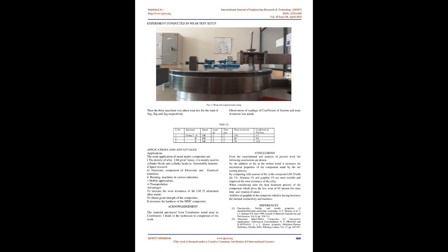In the pin-on-disc test, wear loss greatly depends upon the wear track condition during the whole running distance. When running for long distances, surface roughness of the wear track worsens and this damaged wear track causes increased material removal from the specimen. From the obtained results, one mold component was made with SiC, Al₂O₃, and graphite in an equal ratio of 1%, cut to 8 mm × 8 mm cross-section for 3 pieces. The heat treatment process kept 3 specimens in an induction furnace for 3 hours at a constant temperature of 274°C, then air cooled. The 3 specimens were then subjected to wear testing under loads of 1 kg, 2 kg, and 3 kg respectively, and coefficient of friction and wear in microns were recorded.